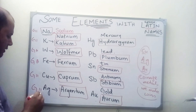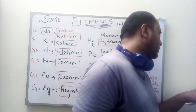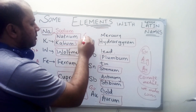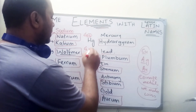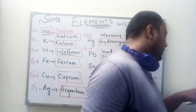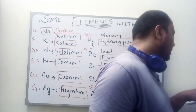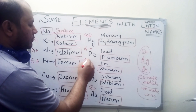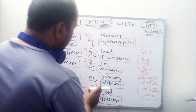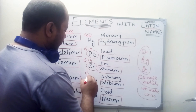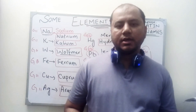Mercury belongs to group 12 of the periodic table. Lead belongs to group 14. Tin belongs to group 14 as well, and antimony belongs to group 15 — tin comes first and antimony comes second in the group. So now you have a clear idea of where these elements stand in the periodic table.